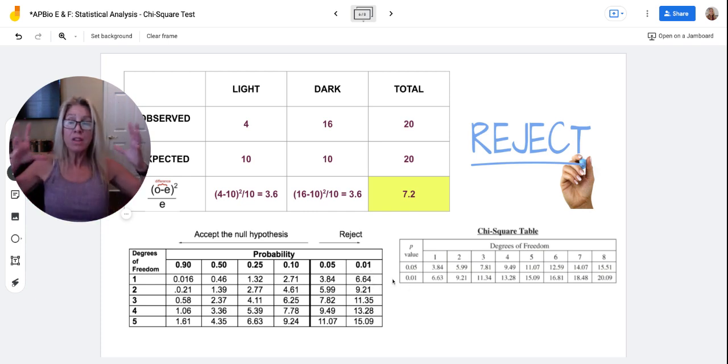Less of a chance, because the bigger your chi-square number is, the smaller the probability is that you're going to get it. It's inversely related.